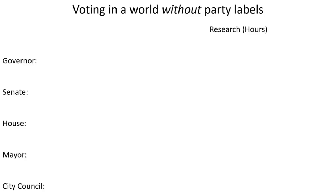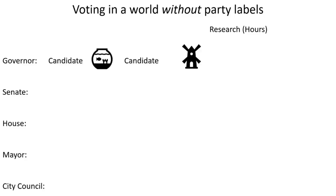Our citizen is getting ready to vote. First they have to vote for governor, and their choice is between candidate Fishbowl and candidate Windmill. I don't know what policies are associated with Fishbowl or Windmill — but that's the point, there are no party labels. So in order to figure out who to vote for, they're going to have to do some research.